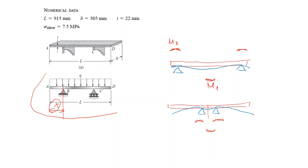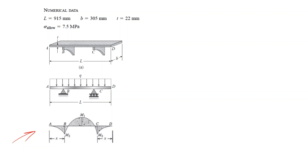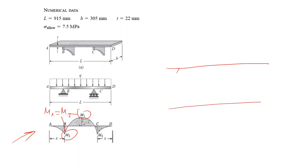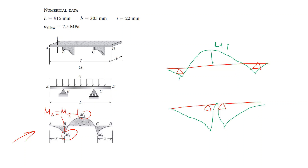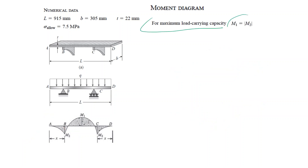The bending moment diagram will show M1 and M2. We try to make M1 equal to M2 in order to have the highest loading capacity. If you place the brackets too far apart or too close, the moment diagram will have a non-uniform shape. In both cases the difference between M1 and M2 is too high.